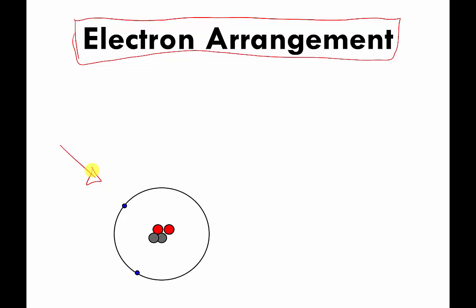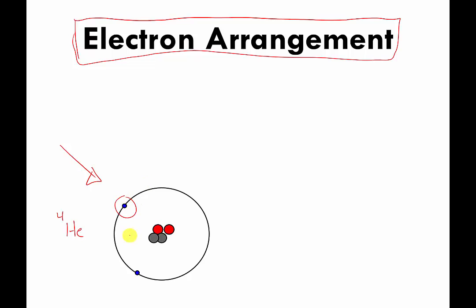Here is some pretend atom. Two red circles means two protons, two protons means a helium atom. This helium atom has a mass number of 4, and it also has two electrons — two negative charges and two positive charges. Because of that, it's electrically neutral, so we could put a zero here if we wanted to.